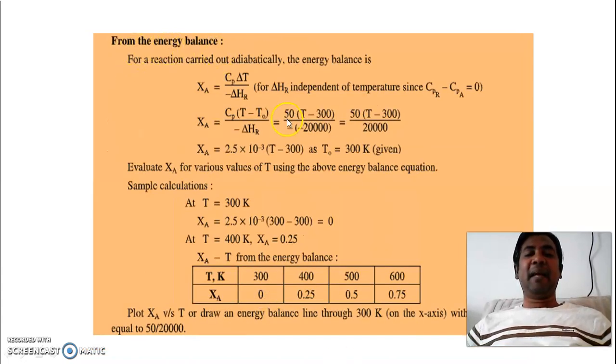From the energy balance, X_AE is C_P delta T upon minus of delta H_R. So if you substitute the values of this C_P, then T_0 as 300 Kelvin, heat of reaction as minus 20,000, you will get X_AE as a function of temperature. So this is an equation governing energy balance.